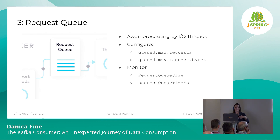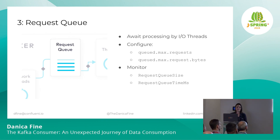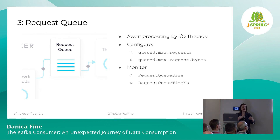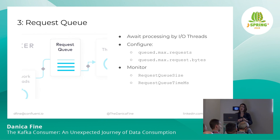Our request is now on the request queue — another short stint for our hero. There are many other requests coming through the brokers at all times; we're not special. For the request queue, you have ways to configure the overall size using queued.max.requests and queued.max.request.bytes. You really want to monitor this queue and make sure requests are actually flowing through it quickly, monitoring the queue size and the amount of time requests actually stay in that queue. If this queue is full for any reason, it's going to block, and requests need to flow through in a timely manner.